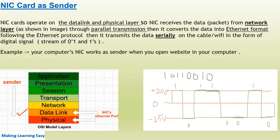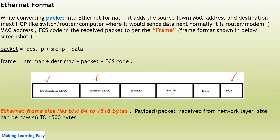For example, your computer's NIC works as a sender when you open any website. The NIC card converts the data received from the Network Layer into the Ethernet format, which is known as a frame. While converting the packet into Ethernet format, the NIC card adds the source MAC address (its own MAC address) and the destination MAC address — which is where it is sending the packet next; it could be a router or any other computer.